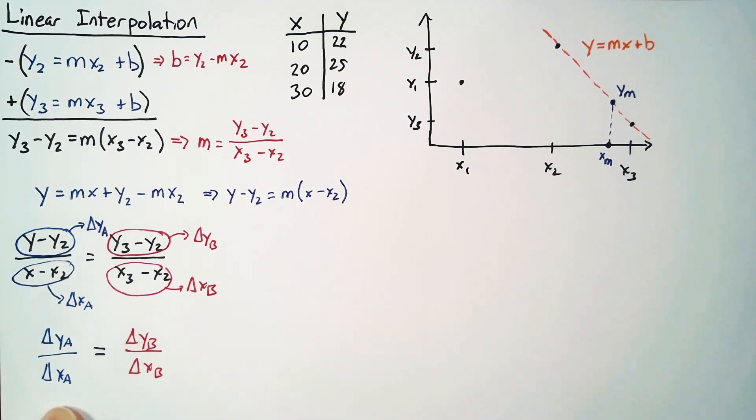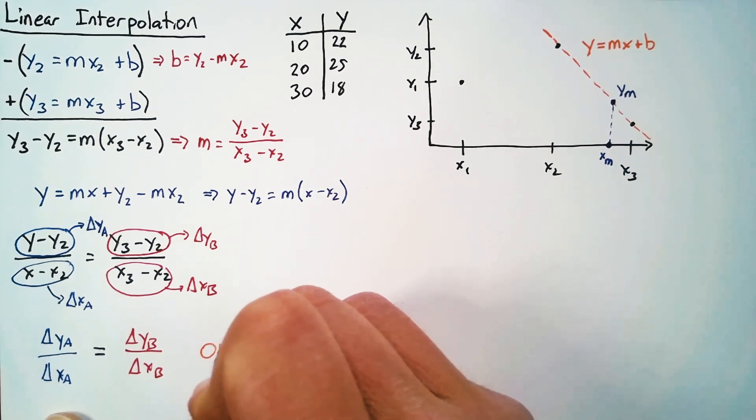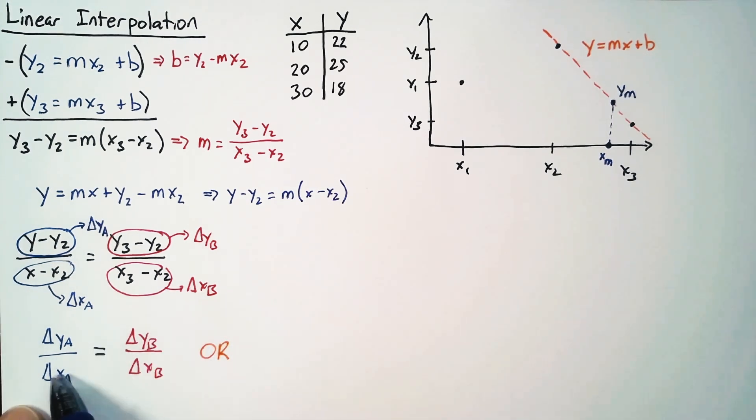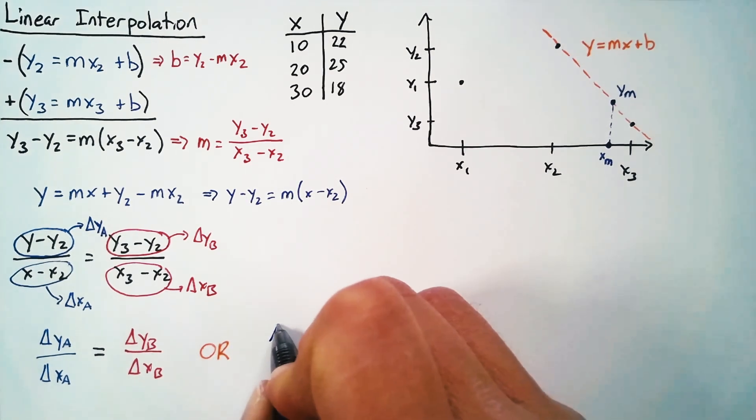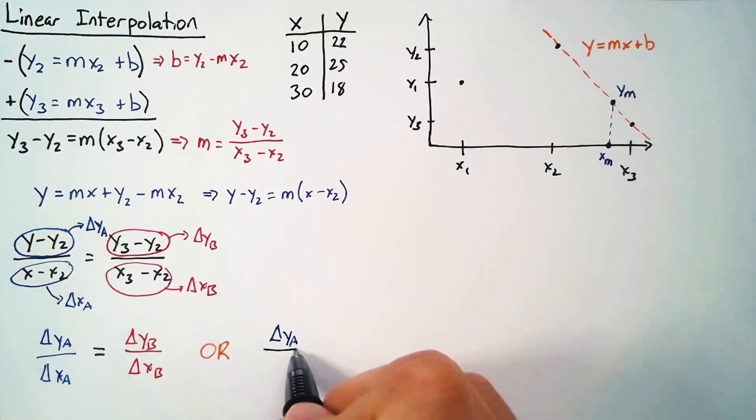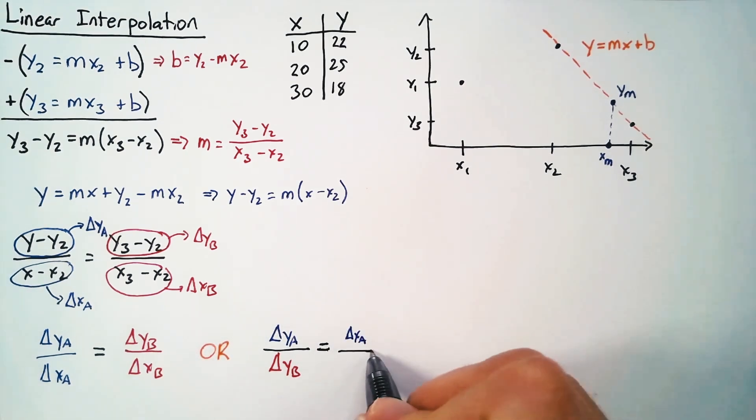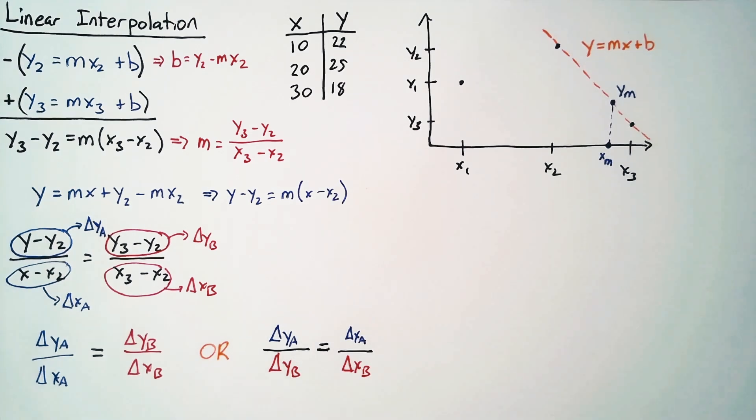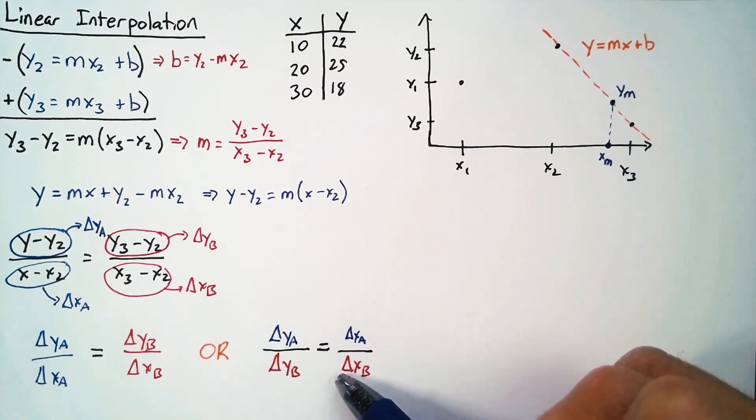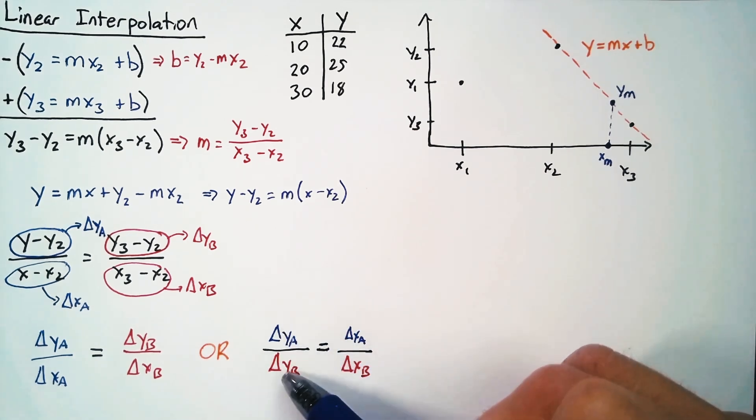Now this is perfectly serviceable, but I actually prefer a slightly different grouping. So what we can do is we can divide both sides by this delta yb to move it down here, and we can multiply both sides by this delta xa to move it up here. And so what we end up with from that is delta ya divided by delta yb is equal to delta xa divided by delta xb.